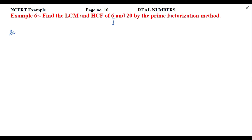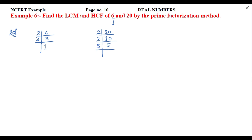So we will do prime factorization. It is very simple — you divide with the least prime number repeatedly. For 6: 2 times 3 is 6, and 3 is a prime number, so we stop. For 20: 2 divides to give 10, 2 again gives 5, and 5 divides by itself since it is prime. So the factors of 6 are 2 × 3, and the factors of 20 are 2 × 2 × 5.